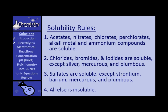Got it? Acetates, nitrates, chlorates, perchlorates, alkali metal compounds, and ammonium compounds are soluble. Chlorides, bromides, and iodides are soluble, except silver, mercurous, and lead(II) examples. Sulfates are soluble except strontium, barium, mercurous, and lead(II) sulfates. All else is insoluble. How do you learn these best? Put them on flashcards, carry them around, say them again and again, and write them many times until you have it thoroughly ingrained in your brain.